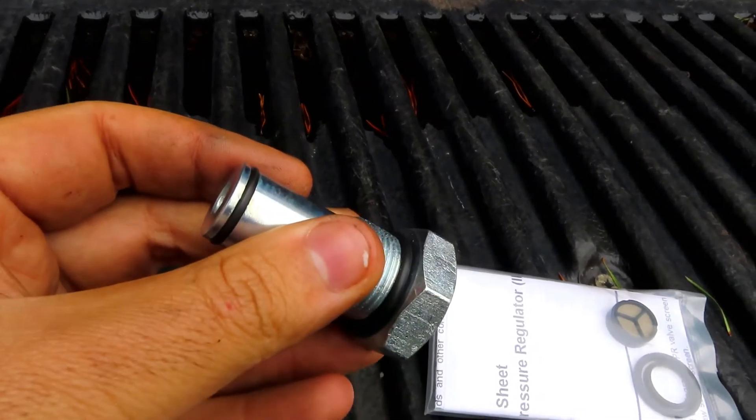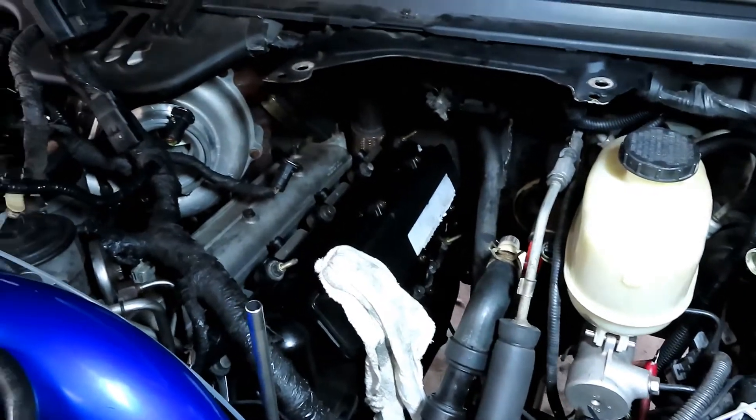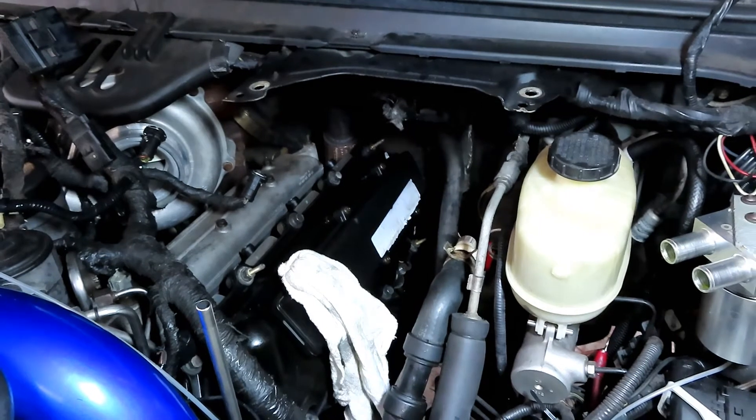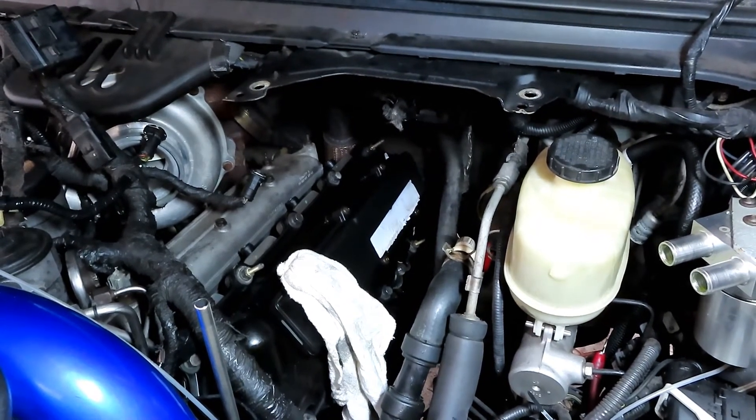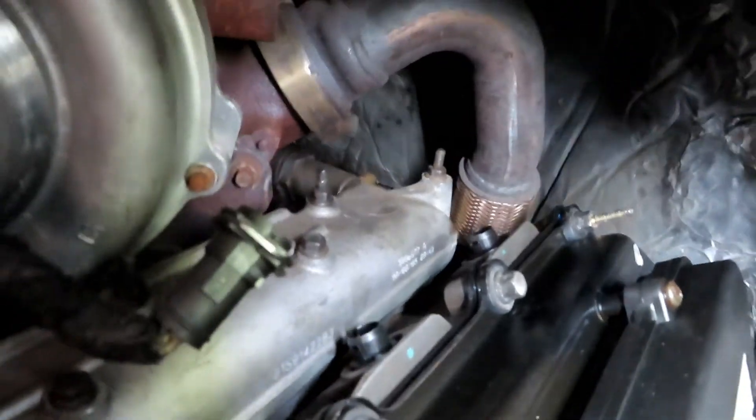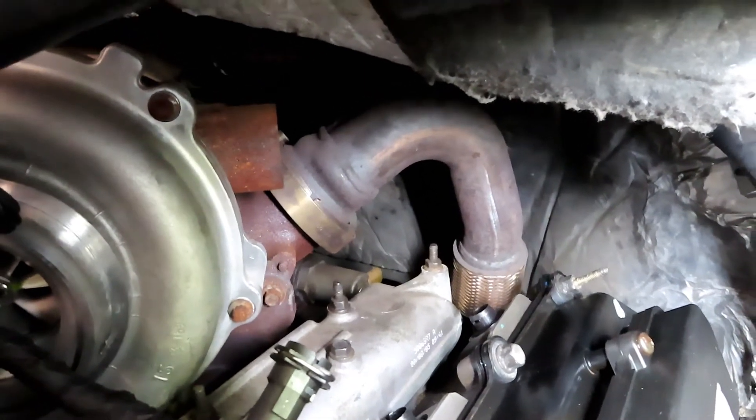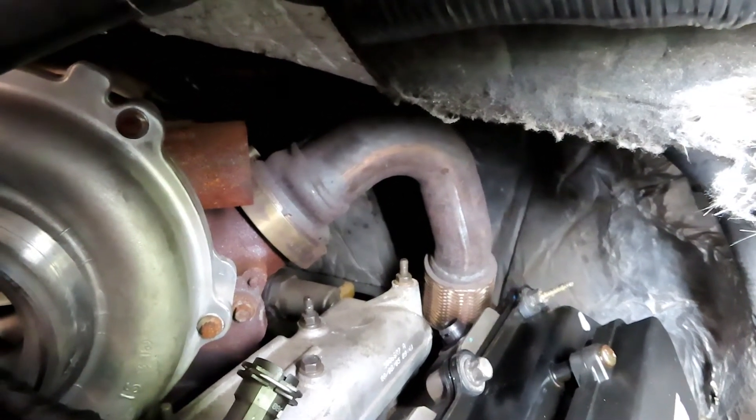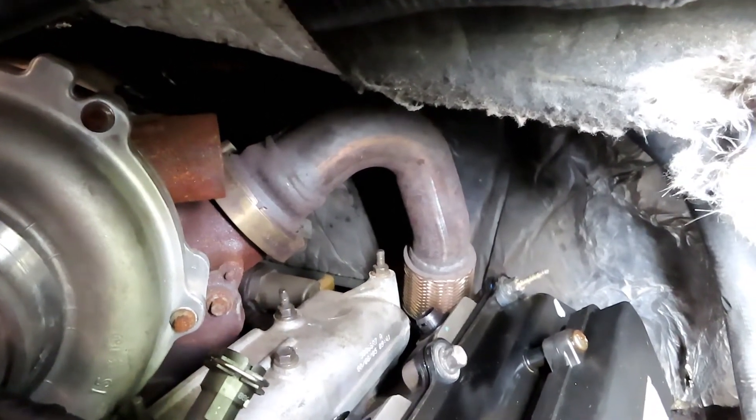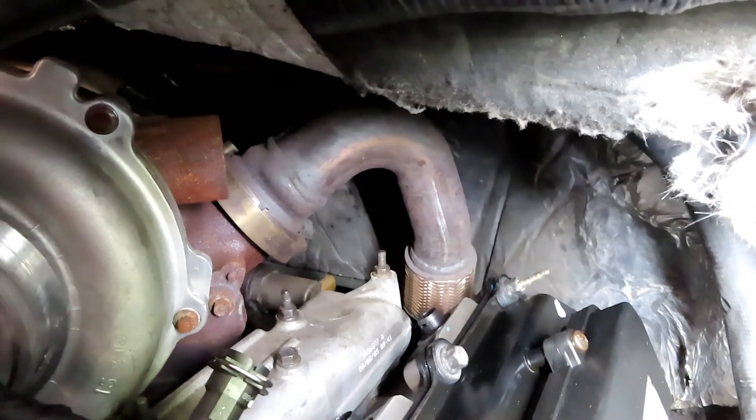I already have my degas bottle and FICAM out of the way because I just did injectors and replaced the cups and seals. On the valve rail, you can see the IPR is back there below the Y-pipe or up-pipe. So that's what I'm going to be removing. Should be pretty easy to access once you have the FICAM and degas bottle out of the way.